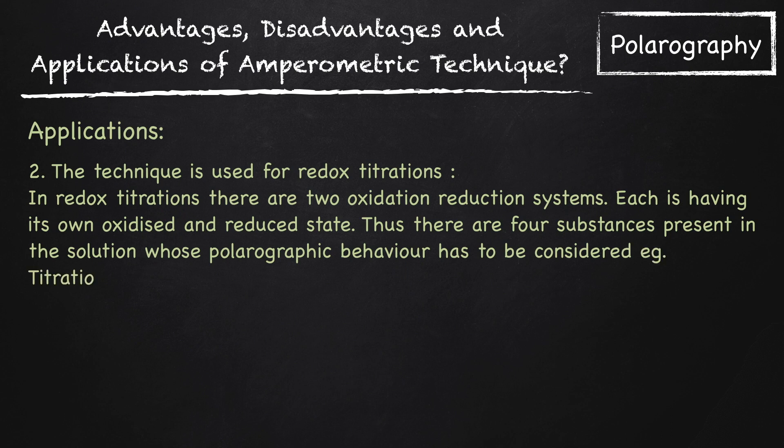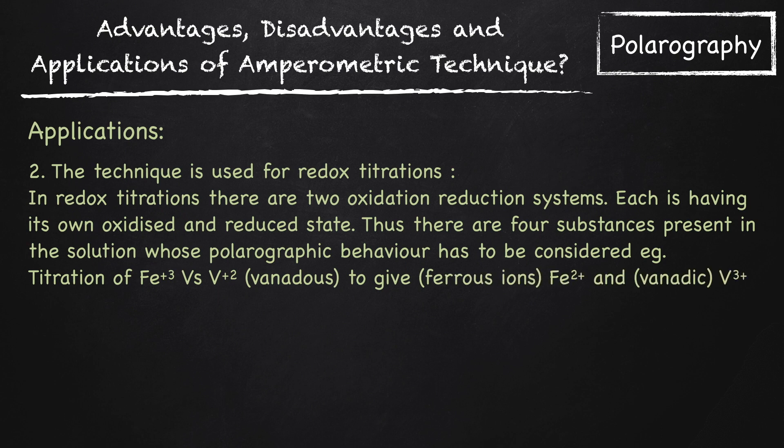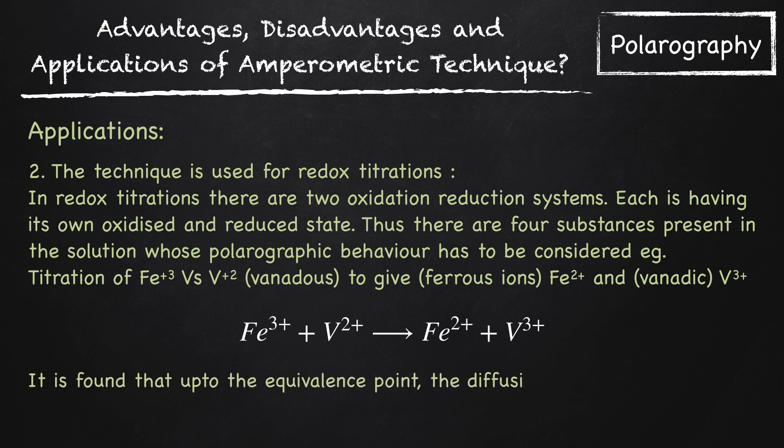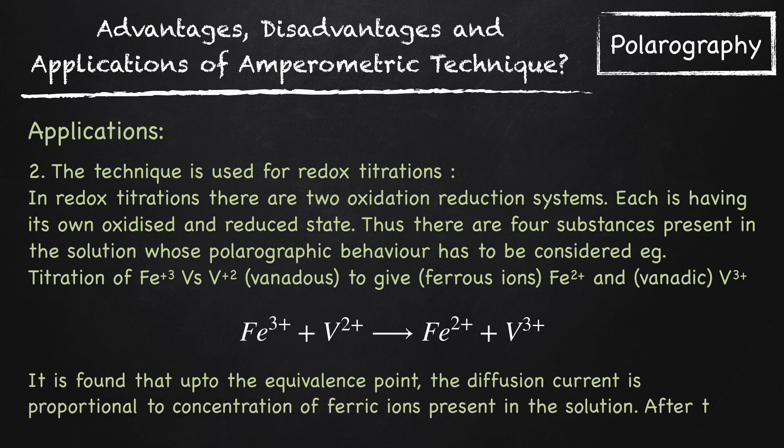For example, titration of Fe³⁺ vs. V²⁺ to give ferrous ions Fe²⁺ and V³⁺. Reaction is Fe³⁺ + V²⁺ producing Fe²⁺ + V³⁺. It is found that up to equivalence point, the diffusion current is proportional to concentration of ferric ions present in the solution and after that it remains more or less constant.